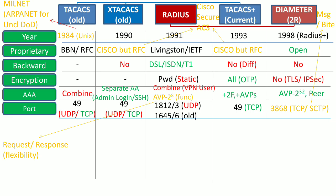TCP processes data in bytes, whereas SCTP processes data in messages — this is the difference between TCP and SCTP.